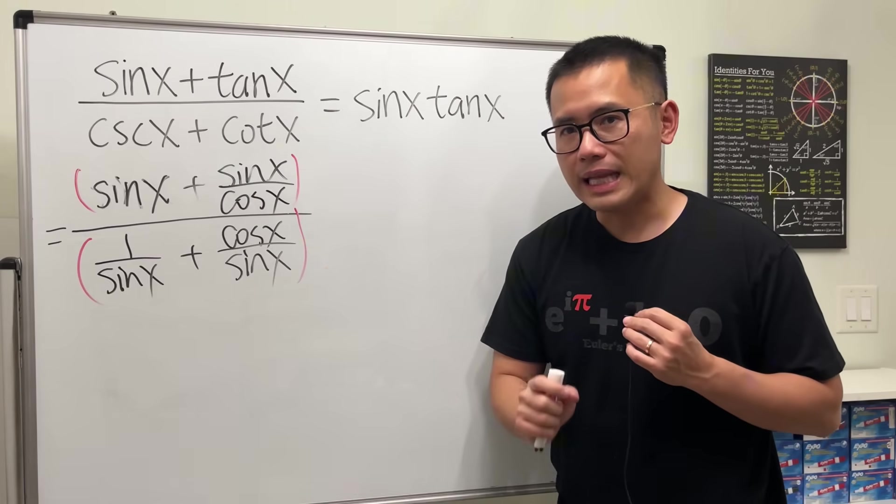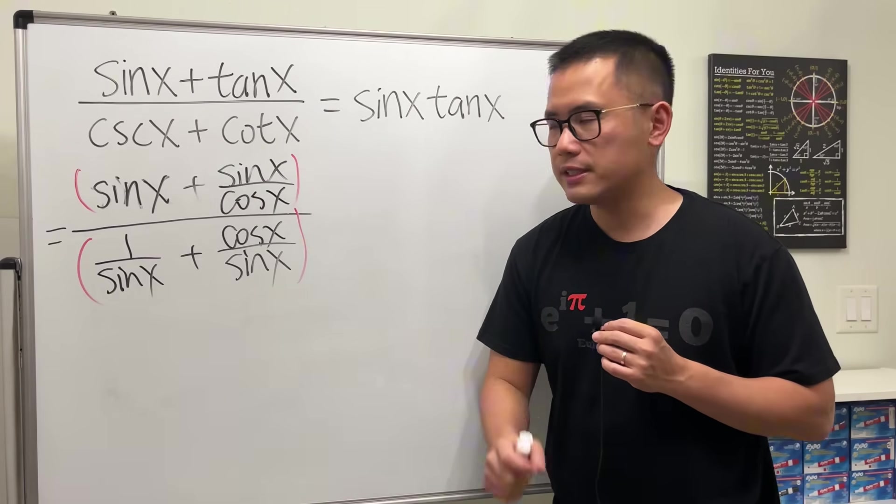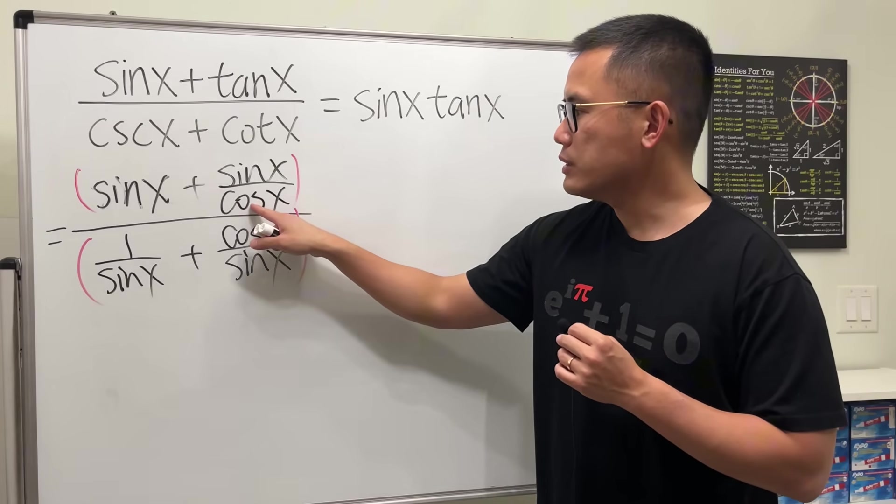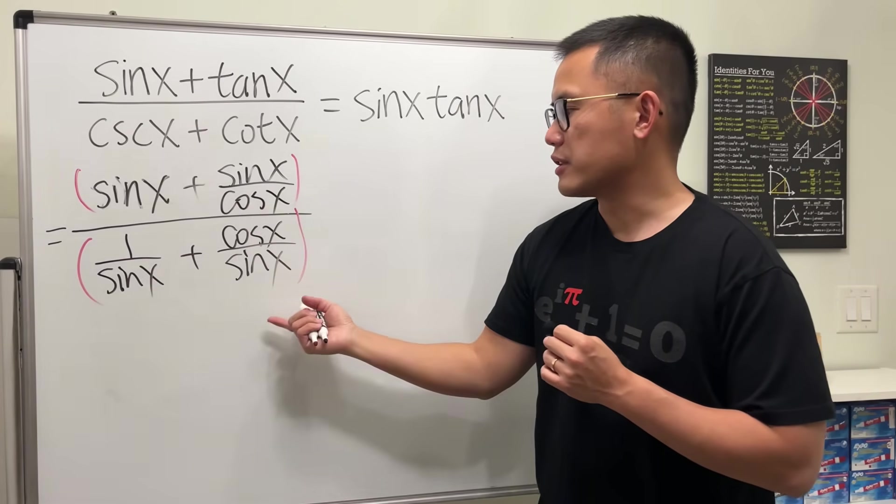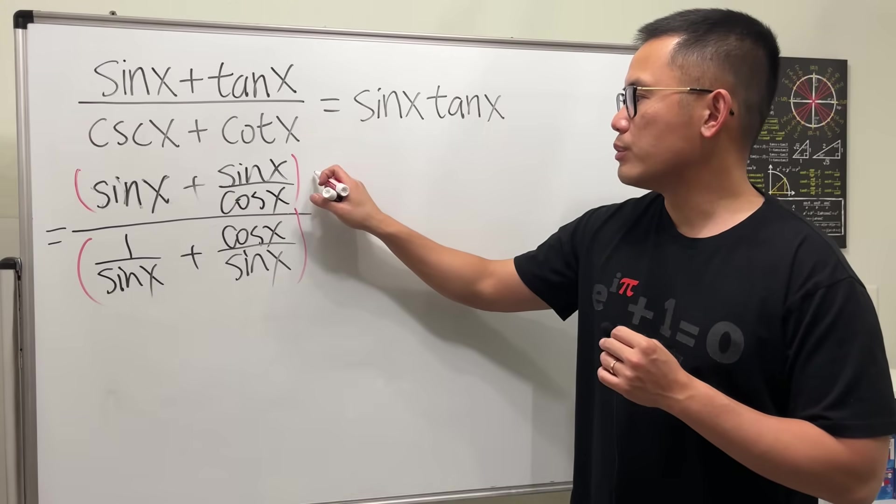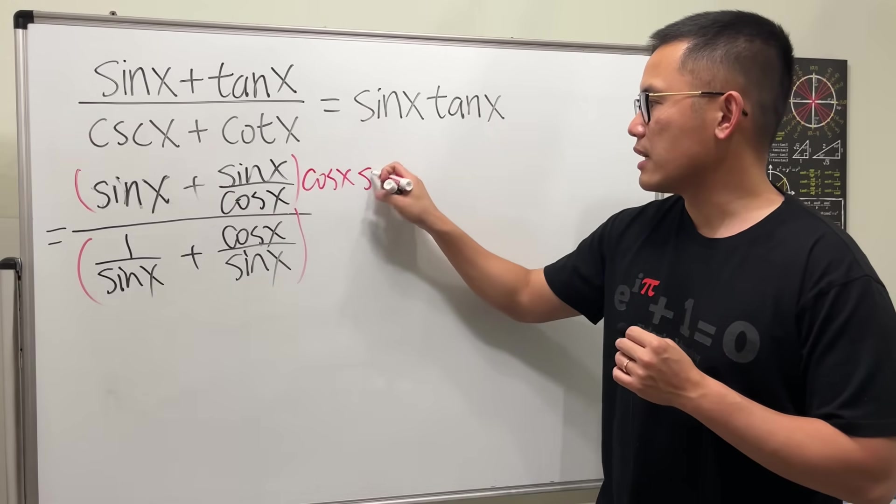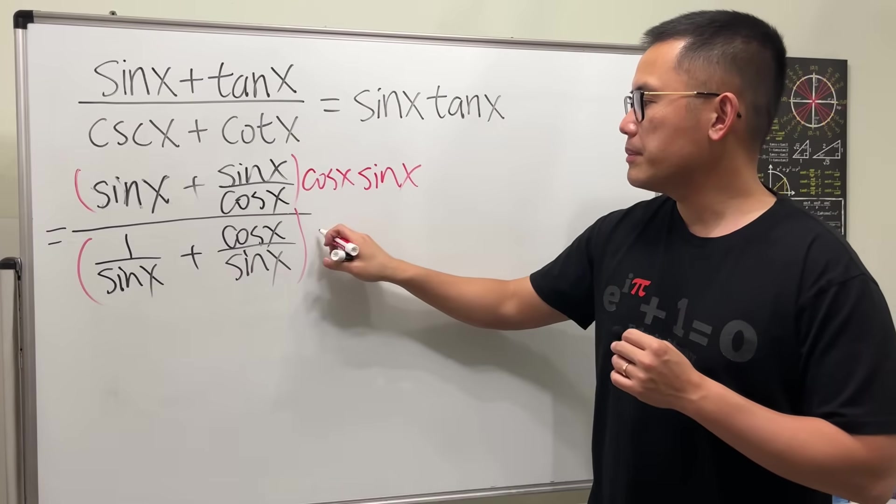We have cosine x, sine x, and sine x. So we just need to multiply by cosine x and also sine x on the top, and of course also on the bottom.